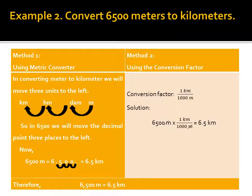Example 2: convert 6,500 meters to kilometers. Method 1 — using the metric converter: in converting meters to kilometers, we move 3 units to the left (meter → dekameter → hectometer → kilometer), so we move the decimal point 3 places to the left. Thus 6,500 meters = 6.5 kilometers. Method 2 — using the conversion factor: 1 kilometer = 1,000 meters. So 6,500 meters × (1 km / 1,000 meters), cancel out meters, giving 6,500 ÷ 1,000 = 6.5 kilometers.